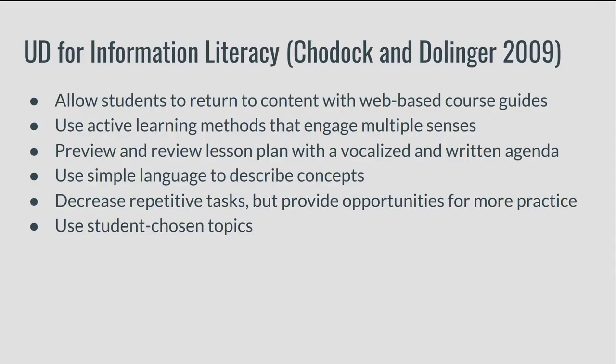I've also included ideas from Ted Chodok and Elizabeth Dollinger's Universal Design for Information Literacy. They developed this specialized framework in response to working with neurodivergent students at Landmark College. Some of their advice included: allow students to return to content with web-based course guides to reduce pressure during instruction sessions; use active learning methods that engage multiple senses; preview and review your lesson plan with a vocalized and written agenda; use simple language to describe concepts, avoiding library jargon as much as possible; decrease repetitive tasks, but do provide opportunities for more practice if students want it; and use student-chosen topics for examples in practice.